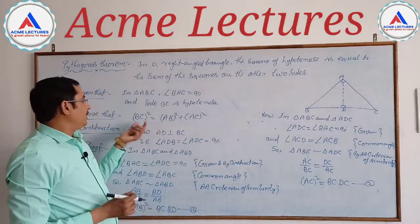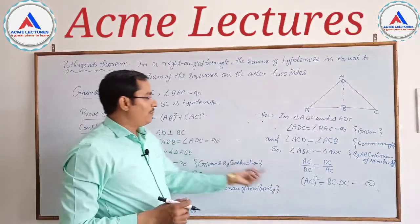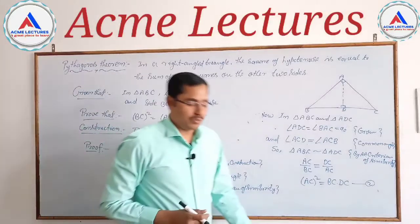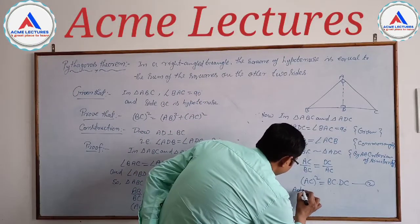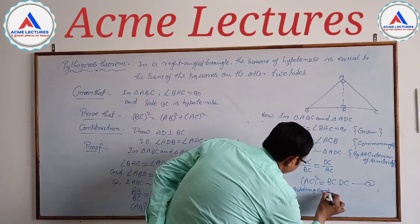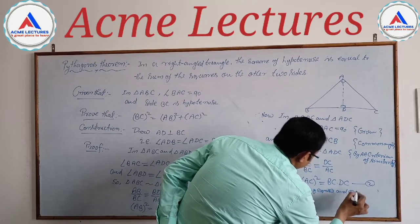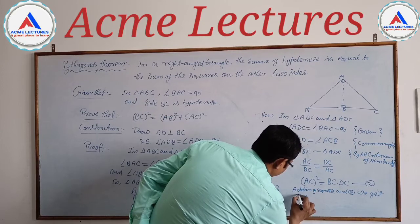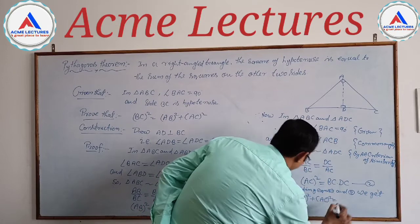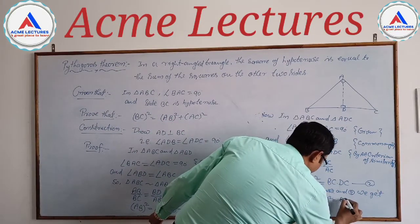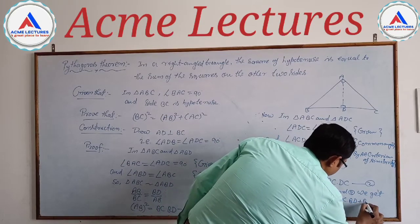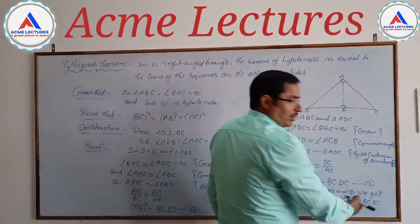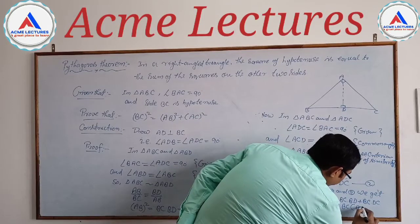Now we need to prove that BC² = AB² + AC². In equation one we found AB², and in equation two we found AC². Adding equations one and two: AB² + AC² = BC × BD + BC × DC. Taking BC common from the two terms, we get BC × (BD + DC).